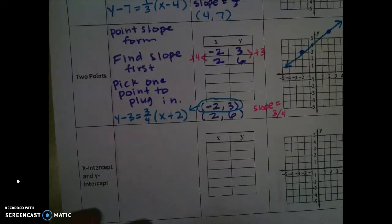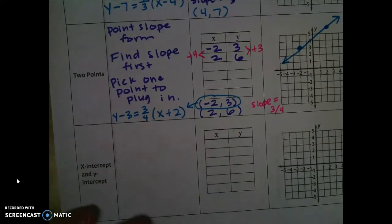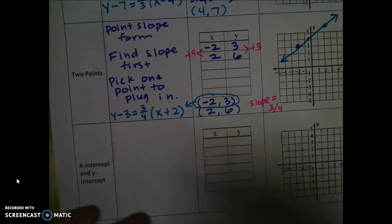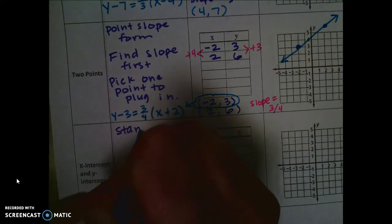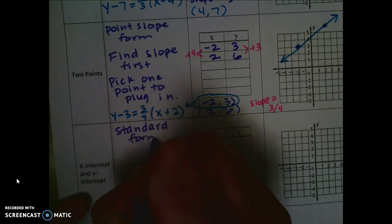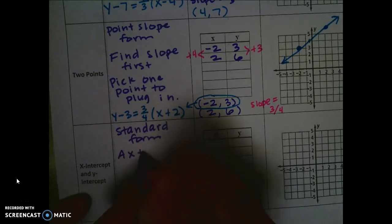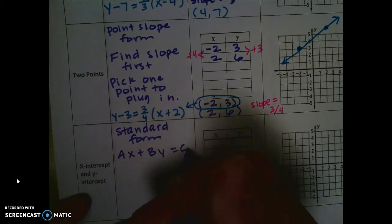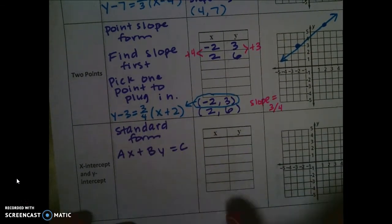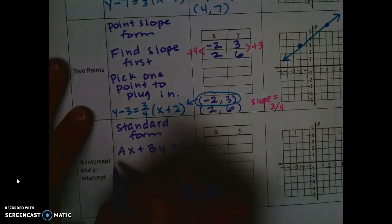Last one, if you are given the x-intercept and the y-intercept, you are most likely going to start in standard form, which is ax plus by equals c. This was the very first type of equation that we learned how to do in this chapter. I called it a combination problem.